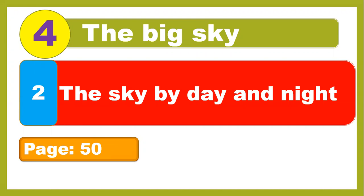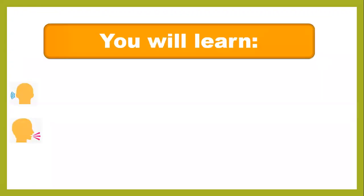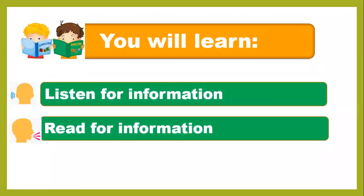In this unit we are going to discuss about what you can see in the sky by day and night, on page 50. In this lesson you listen to information about the sky — what you can see in the sky in the day and in the night, and what a star is and what a planet is. After that, you have to read the information.